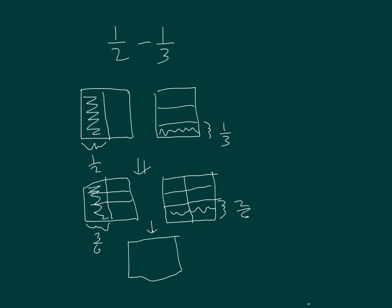So, for my new model, I have 6. I started with 3 sixths, and I subtracted out 2 of those 6. 1 half minus 1 third is equal to 3 sixths minus 2 sixths, which equals 1 sixth.